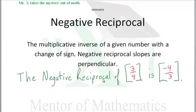The negative reciprocal of three-fourths is negative four-thirds. The negative reciprocal of negative three-sevenths is seven over three, seven-thirds, two and one-third. The negative reciprocal of one-fiftieth is negative fifty.